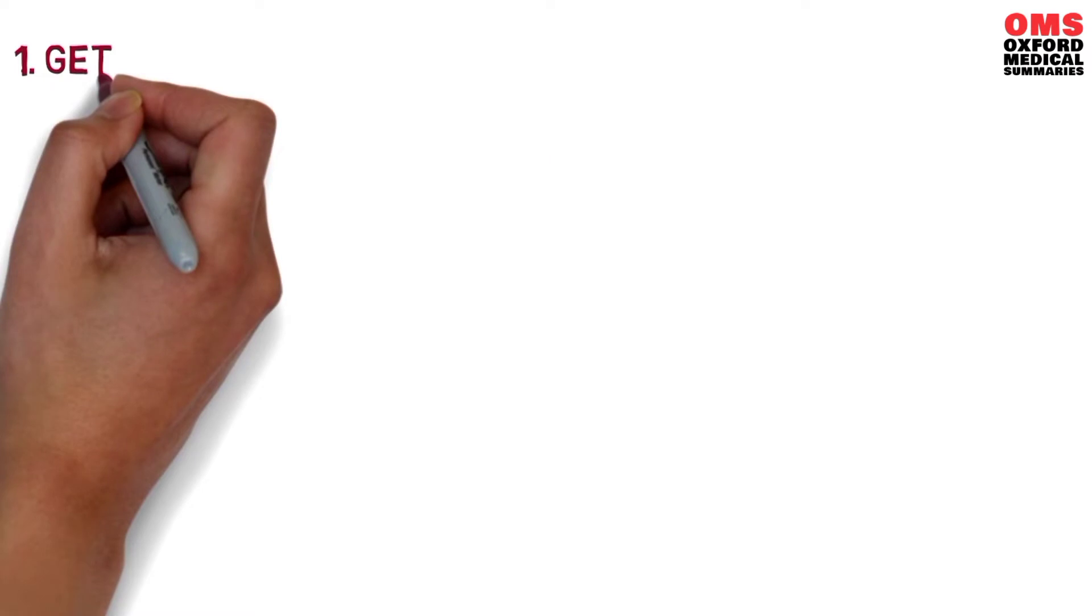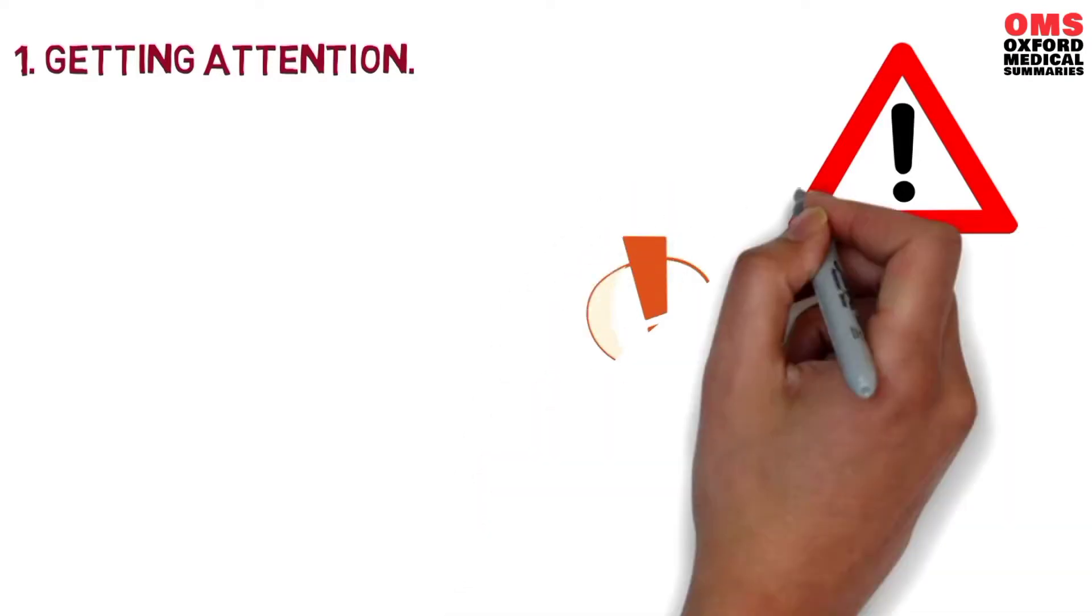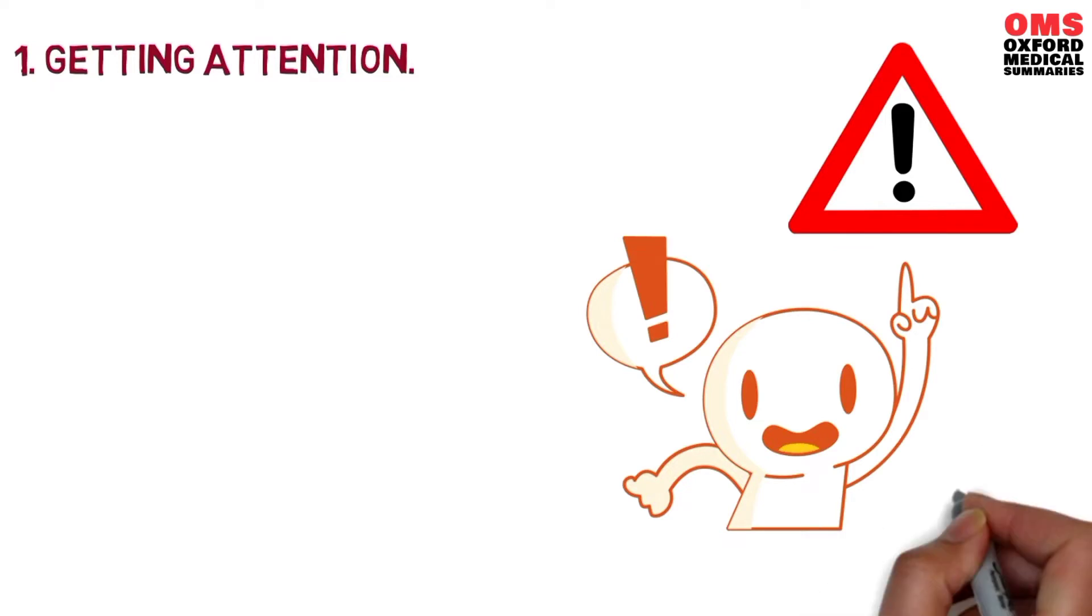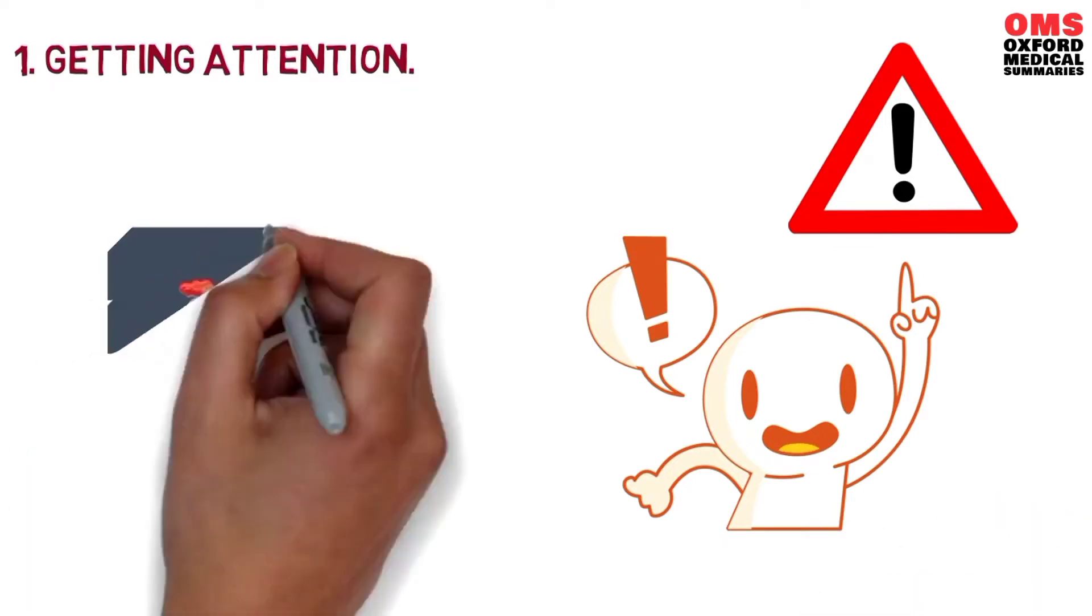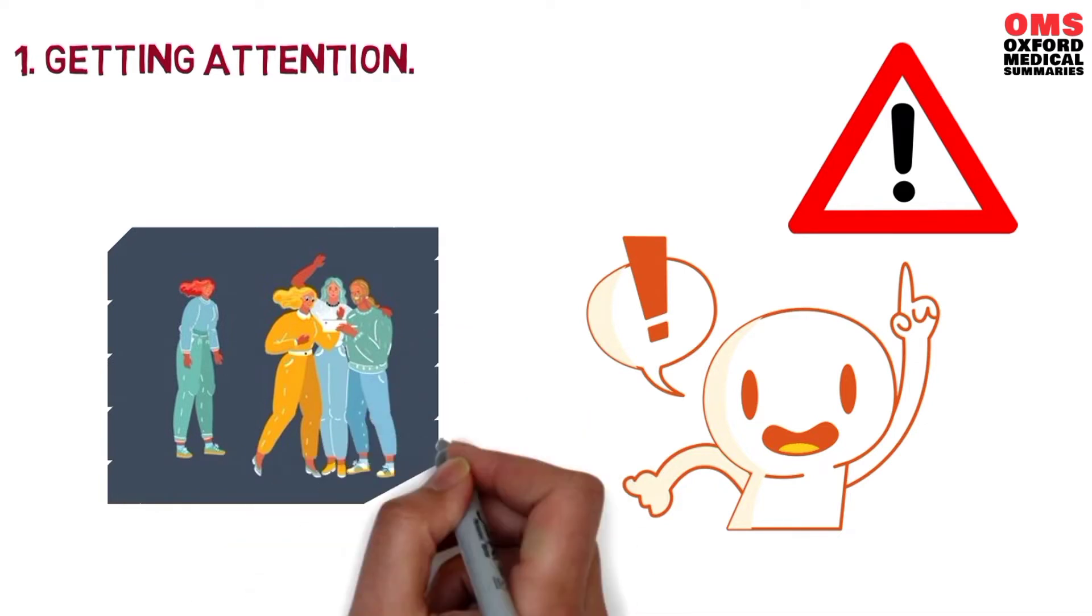Number one, getting attention. Humans have an innate need to be acknowledged by other people. Attention from others makes them feel safe, secure and cared for. Being recognized by others makes them feel that they belong, that they are part of the tribe. People will often complain simply because they want attention from others and can't think of another more positive means of getting the notice that they crave.